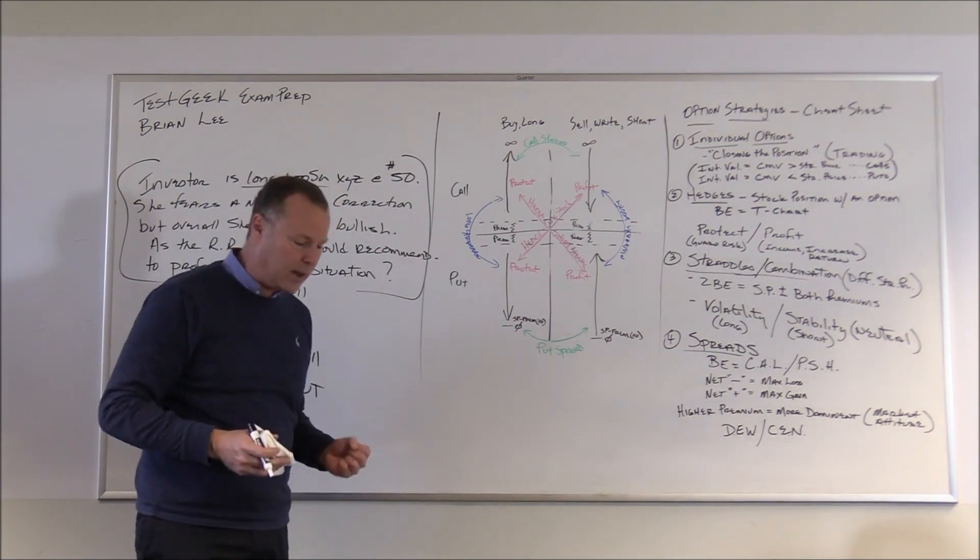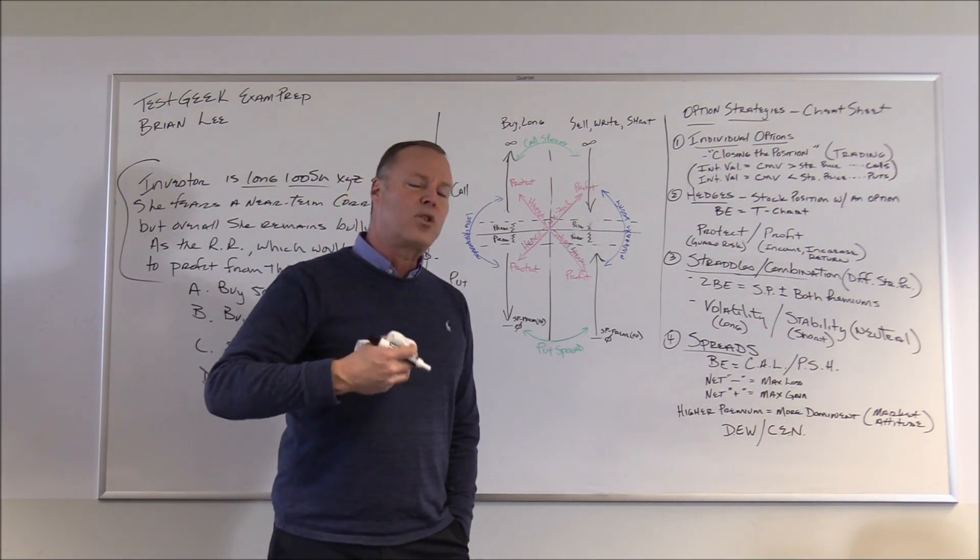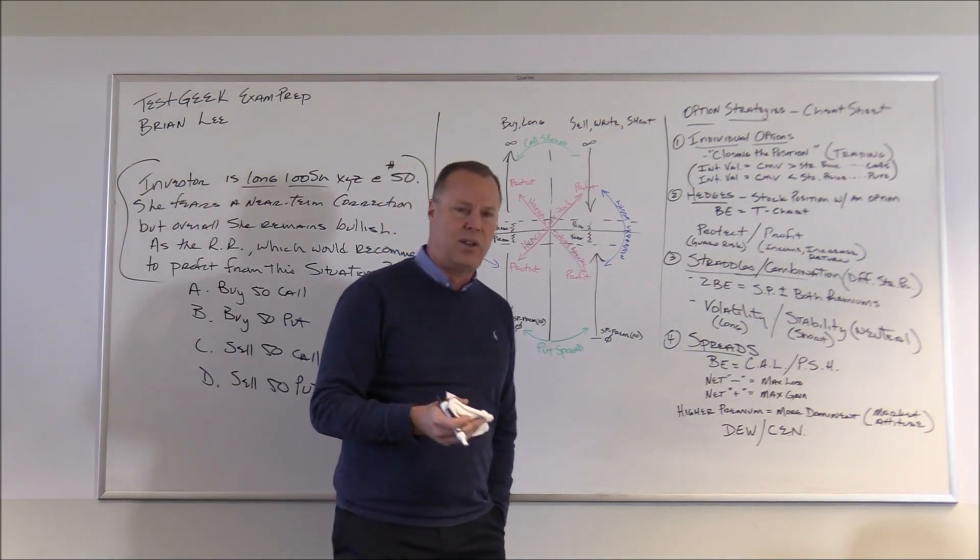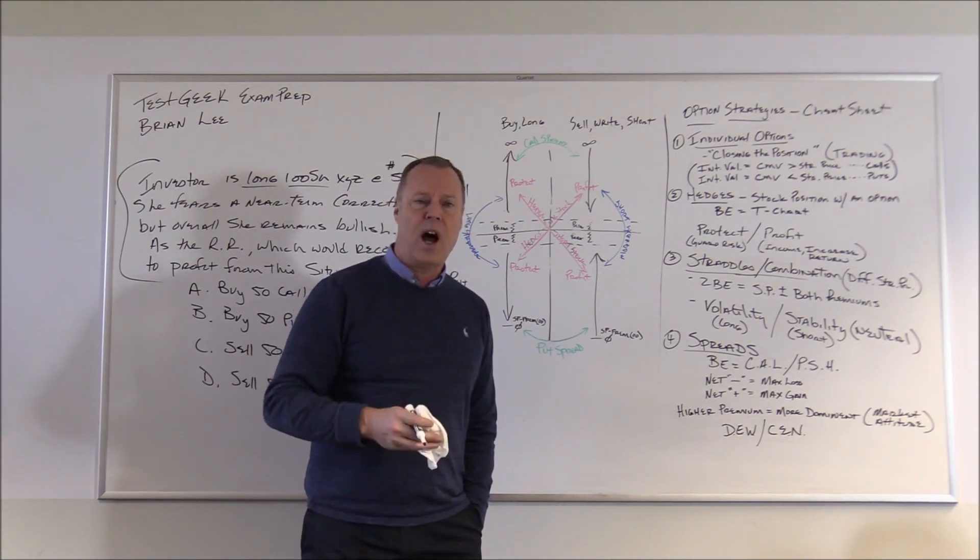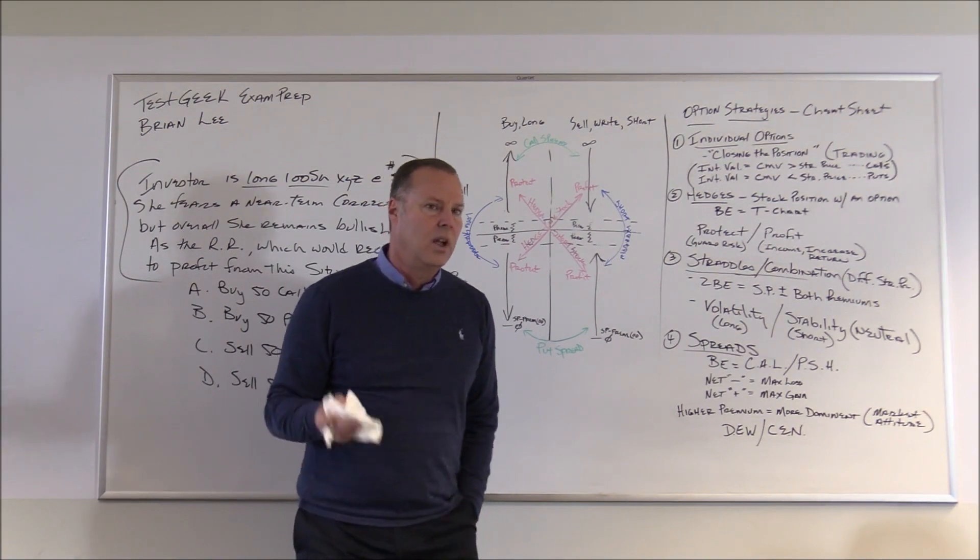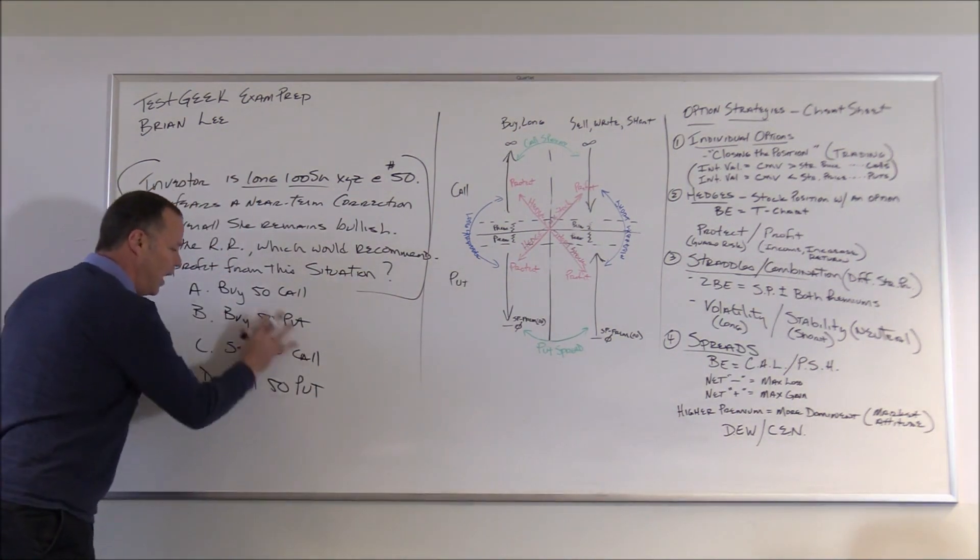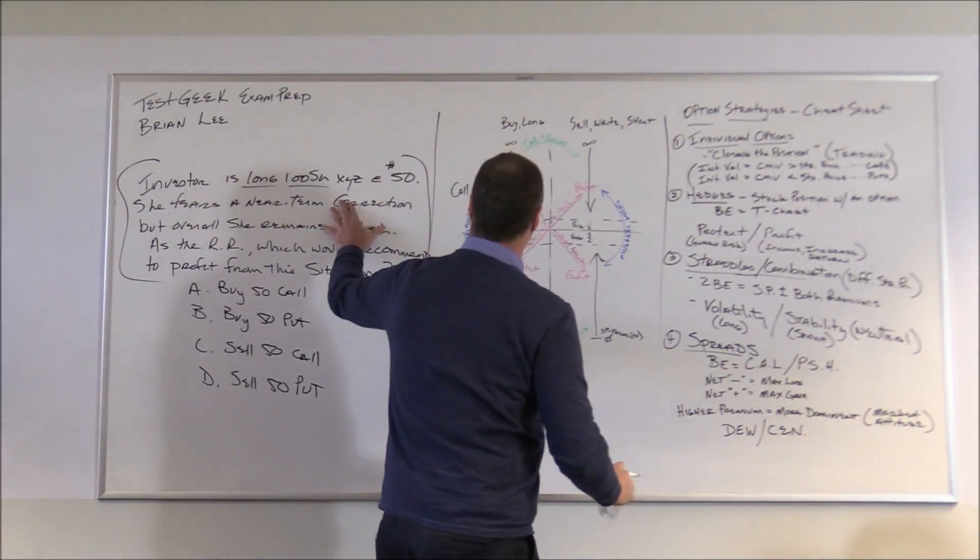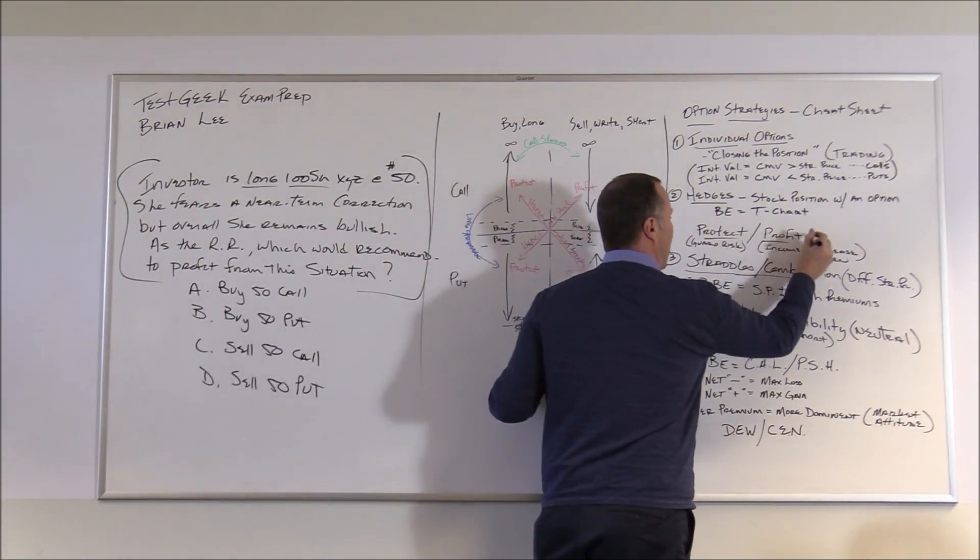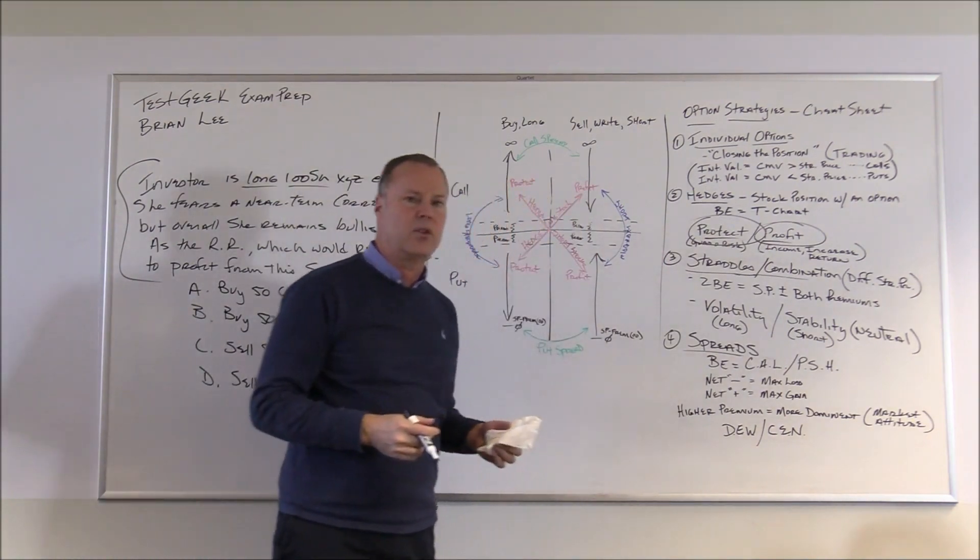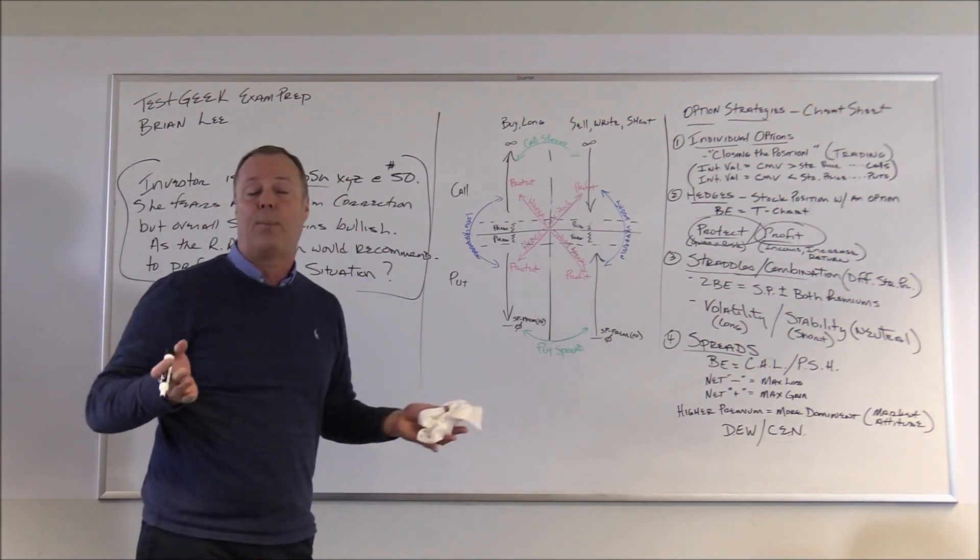So what did we say? First step, recognize the option strategy. You're thinking, well, where's the options here? The test question isn't indicating per se that this is an option problem. But hopefully the answer choices do. All the answers are options, so obviously it's an option problem. So which strategy is it? Well, she's long 100 shares of stock. Instantly know it's a hedge. A stock position with an option. And since the answer choices are in words, not numbers, we know there's no computation here. It's a strategy question or suitability question. So you don't have to worry about T-charts or computing anything.